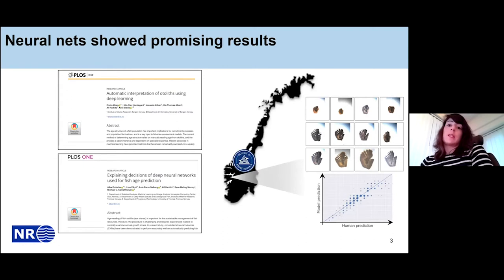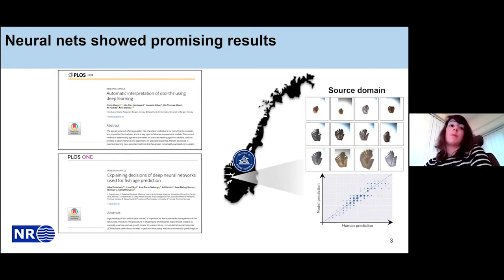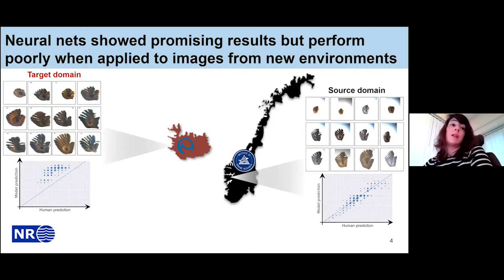We would expect that if we take this model and apply it to similar images from the Institute of Marine Research — what we call the source domain — the model would perform equally well. The problem is that when we have images acquired in new environments, which I call the target domain, there is a big problem in model performance. The neural network completely overestimated the ages of the fish with these new images, which is a domain shift between the source and target domains.